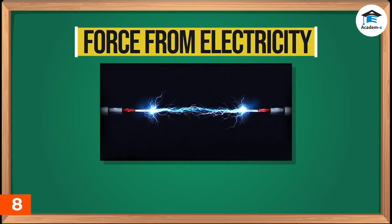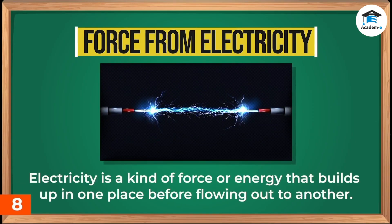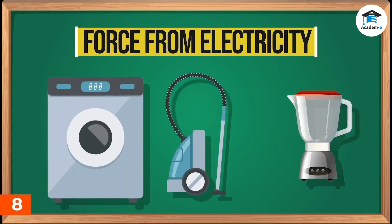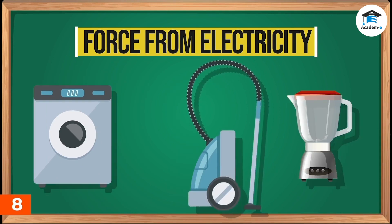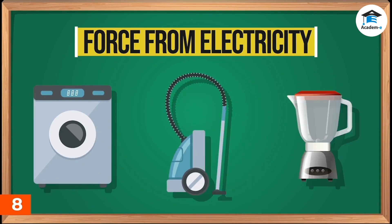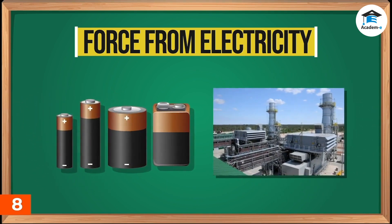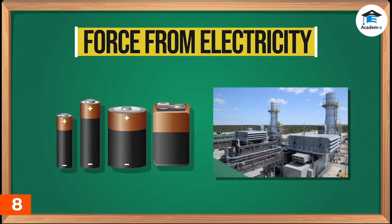Force from electricity. Electricity is a kind of force or energy that builds up in one place before flowing out to another. It provides electrical force that is used to run appliances like washing machines, blenders, and vacuum cleaners. Electricity comes from other sources like batteries and power plants.